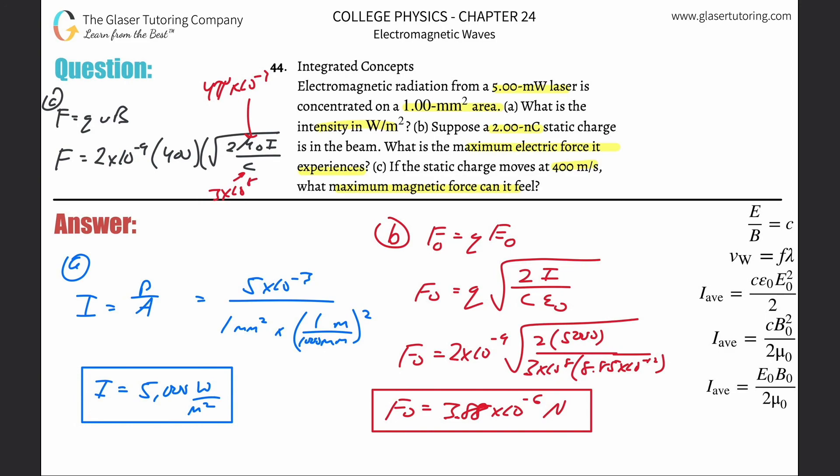2 times 10 to the minus 9th times 400 times square root of 2 times 4 pi times 10 to the minus 7th times that intensity we found before of 5,000, divided by the speed of light, 3 times 10 to the 8th. And here we go, 5.18. The force here is going to be 5.18 times 10 to the minus 12th Newtons.